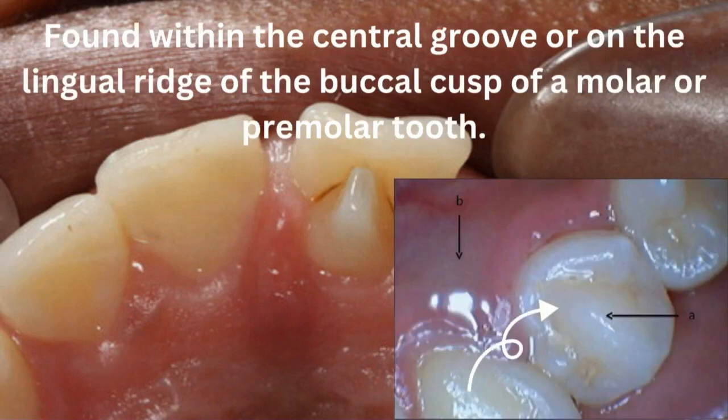Dens evaginatus is most commonly found within the central groove or on the lingual ridge of the buccal cusp of a molar or premolar. As you can see in the picture, it is found on the molar in the central groove. Here is the X-ray appearance for dens evaginatus — we have a radio-opacity on the central groove of the tooth, confirming it is not found within the pulp but on the surface of the enamel. So it is dens E, not N.